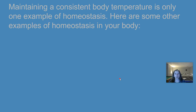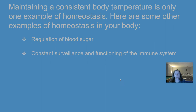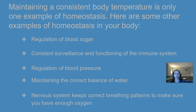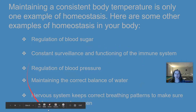Maintaining a consistent body temperature is only one example of homeostasis. Here are some other examples: regulation of blood sugar so that your blood sugar doesn't get too high; constant surveillance and functioning of the immune system, which is always maintaining balance within your body; regulation of your blood pressure; maintaining the correct balance of water; and the nervous system keeps correct breathing patterns to make sure you have enough oxygen. All of these things are types of homeostasis happening in your body.